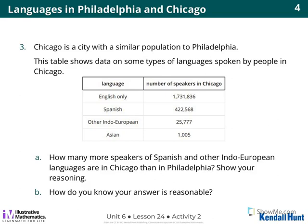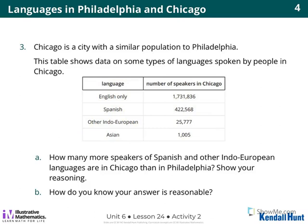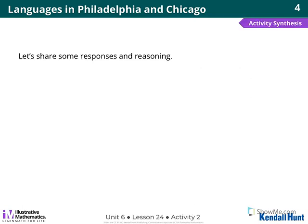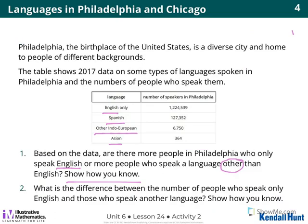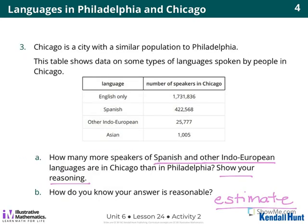Number three: Chicago is a city with a similar population to Philadelphia. You're going to figure out how many more speakers of Spanish and other Indo-European languages are in Chicago than in Philadelphia. Show your reasoning. And part B — this goes back to yesterday's talk — how do you know your answer is reasonable? Can you do some estimating and rounding? You could do some estimating. We're going to share. About ten minutes — work with your partner. We're going to go over number three together because I think that one is the most challenging.